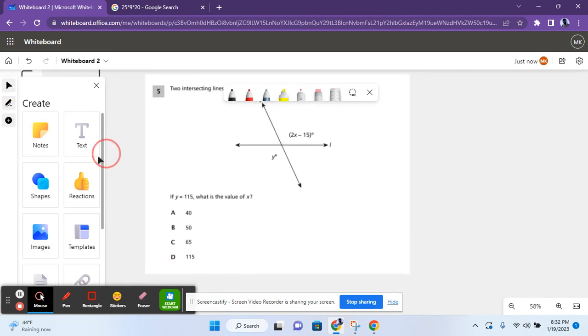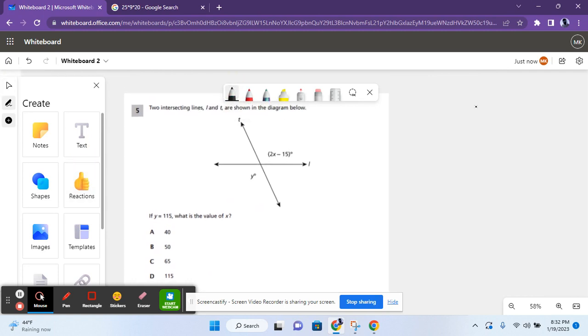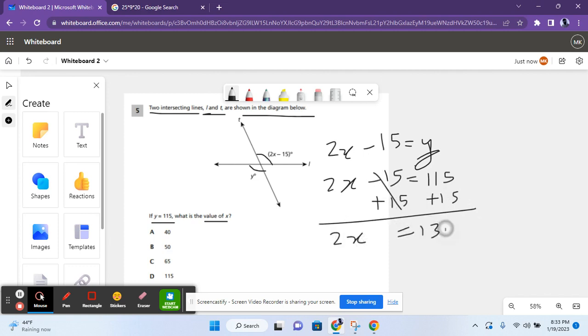Let's move on to the next problem. For question 5, it says two intersecting lines, L and T, are shown in the diagram below. If Y equals 115, what is the value of X? So these two angles, they are vertical, because they form an X, and their values are the same. So 2X minus 15 equals Y. And if Y equals 115, that means 2X minus 15 equals 115. Now you have to add 15 to both sides to cancel out the 15. You get 2X equals 130. And you divide both sides by 2 to cancel out the 2, and you get X equals 65, which gives you answer choice C.